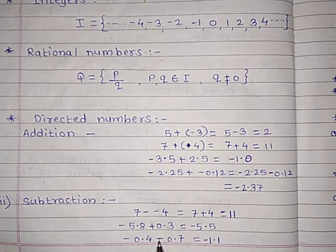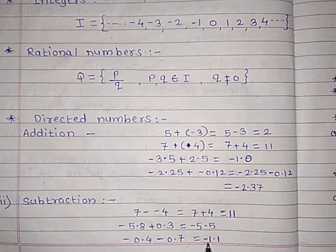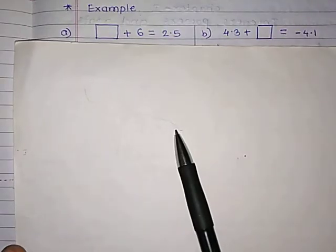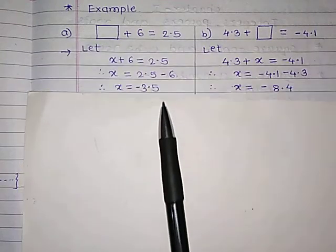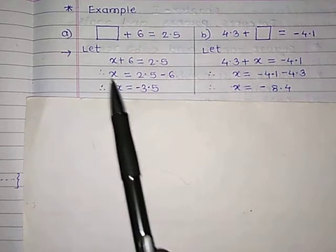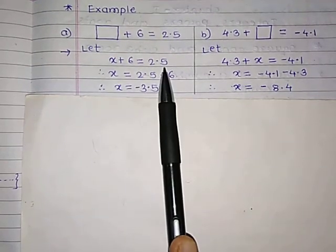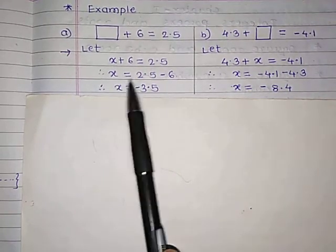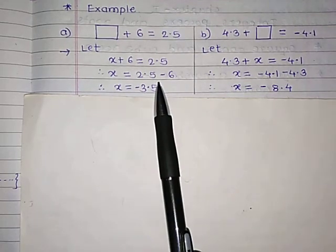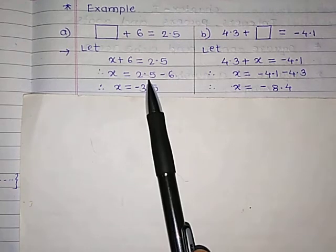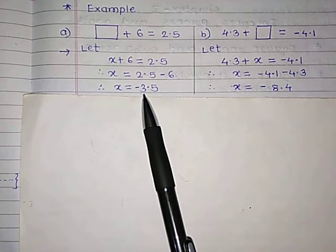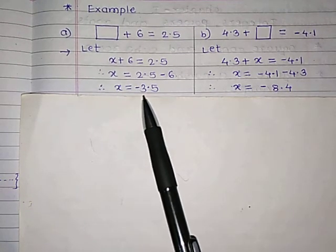Minus 0.4 minus 0.7. Both the signs are the same, so we have to add: 7 plus 4 is 11, carry 1, giving minus 1.1. Now some examples. Dash plus 6 equals 2.5. Let x plus 6 equals 2.5. Therefore x equals 2.5 minus 6. Here 6 is bigger and 2.5 is smaller, so we subtract 2.5 from 6 and get 3.5 with negative sign. So x equals minus 3.5.